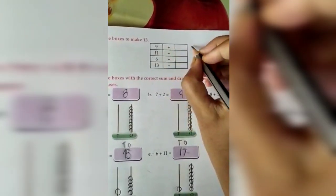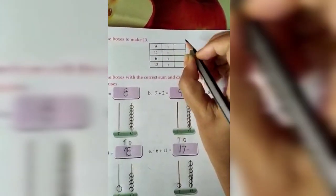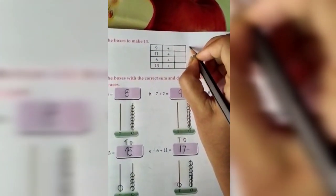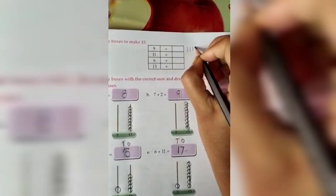So 9 is there, so we will count from 10. Because we are doing forward counting, 9 is already there, so no need to count 9. So 9, after that 10 comes. 10, 11, 12, 13.